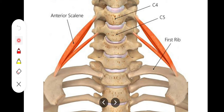The nerve supply is by the ventral rami of C4 to C6. The origin is C3 to C6 vertebrae, and C4 to C6 ventral rami supply the muscle. Its action includes anterolateral flexion of the neck or cervical spine, elevating the first rib during deep inspiration, and rotating the cervical spine to the opposite side. It also stabilizes the neck along with other muscles and elevates the first rib during inhalation.